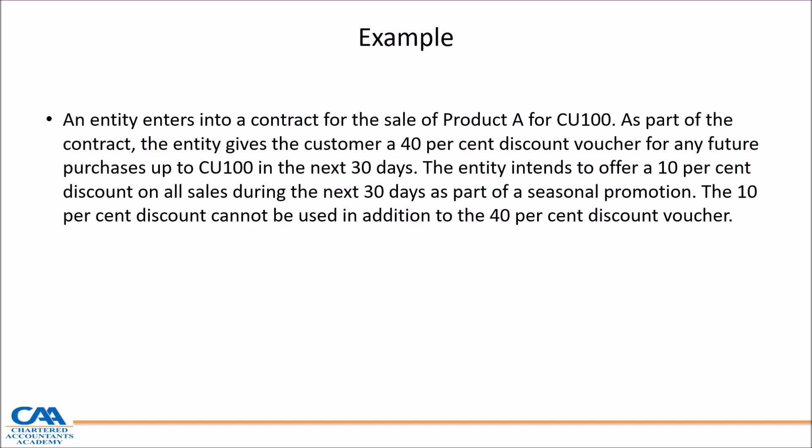An entity enters into a contract for the sale of a product for $400. As part of the contract, the entity gives the customer a 40% discount voucher for future purchases up to $100 in the next 30 days. The entity intends to offer a 10% discount on all sales during those 30 days. The 10% discount cannot be used in addition to the 40% voucher. So only the incremental discount — the additional 30% — provides the customer a material right, and the entity accounts for this incremental discount as a separate performance obligation.